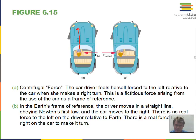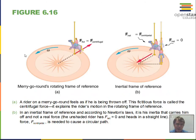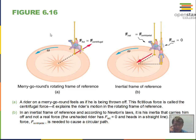Inertia gets interpreted as centrifugal force. You're not really being forced to the outside of the curve. On a merry-go-round, the same thing happens — you feel an outward force because inertia is trying to keep you going straight ahead while the platform is turning. If you go straight ahead, you end up towards the outside.